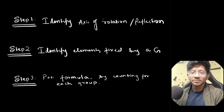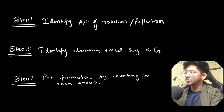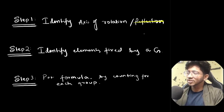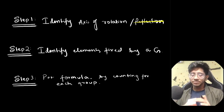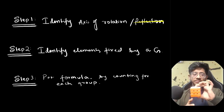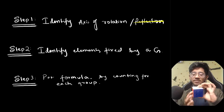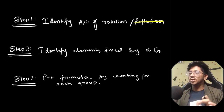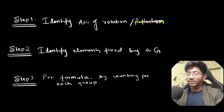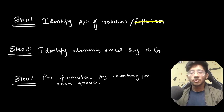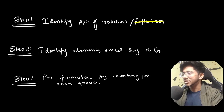Going back to the basic steps: identify the axes of rotation — no reflections in this particular case, rotations only. For a particular rotation, we see which faces might get the same color and which two are fixed. Then we find the fixed elements for that particular group or rotation around a particular axis, and apply the Burnside Lemma formula.